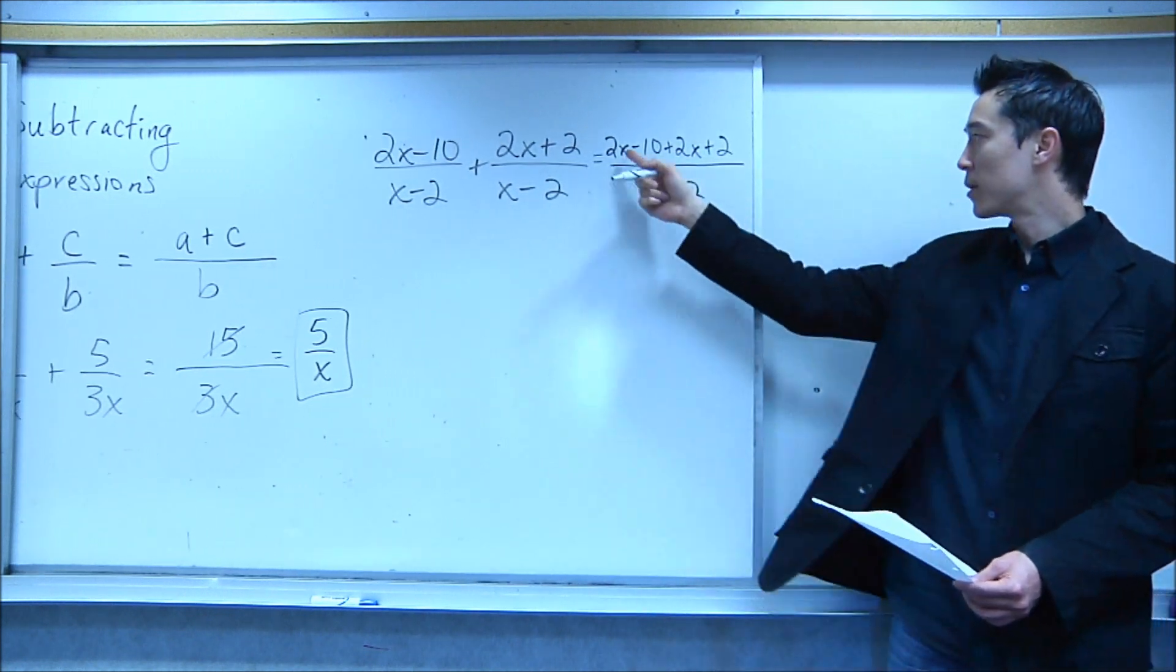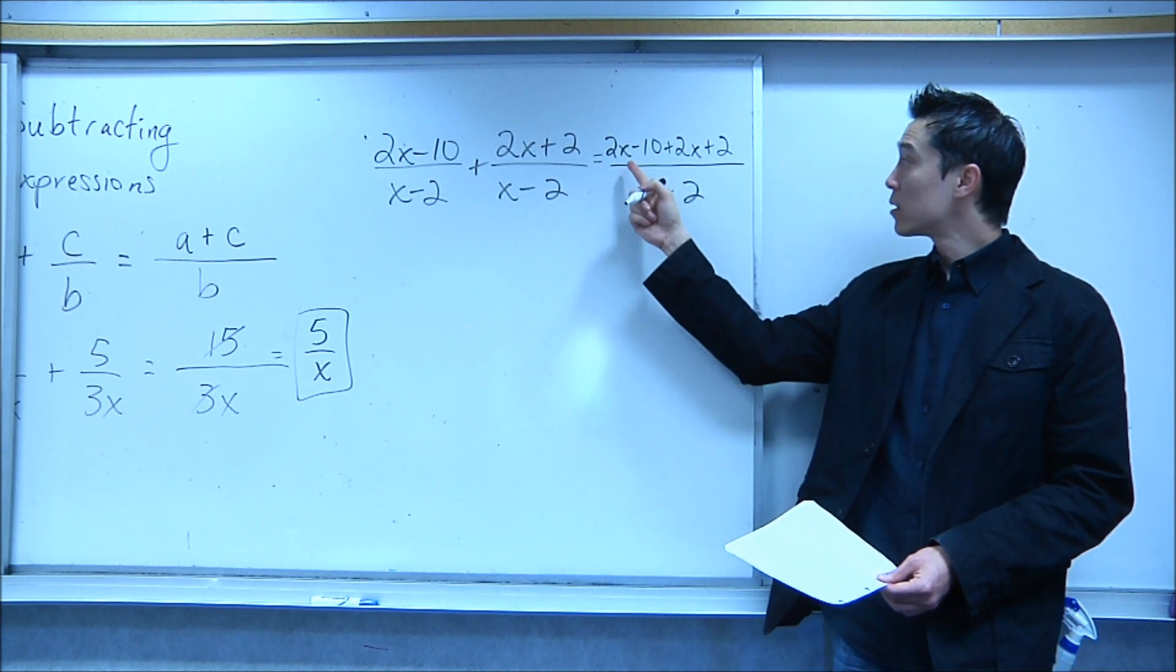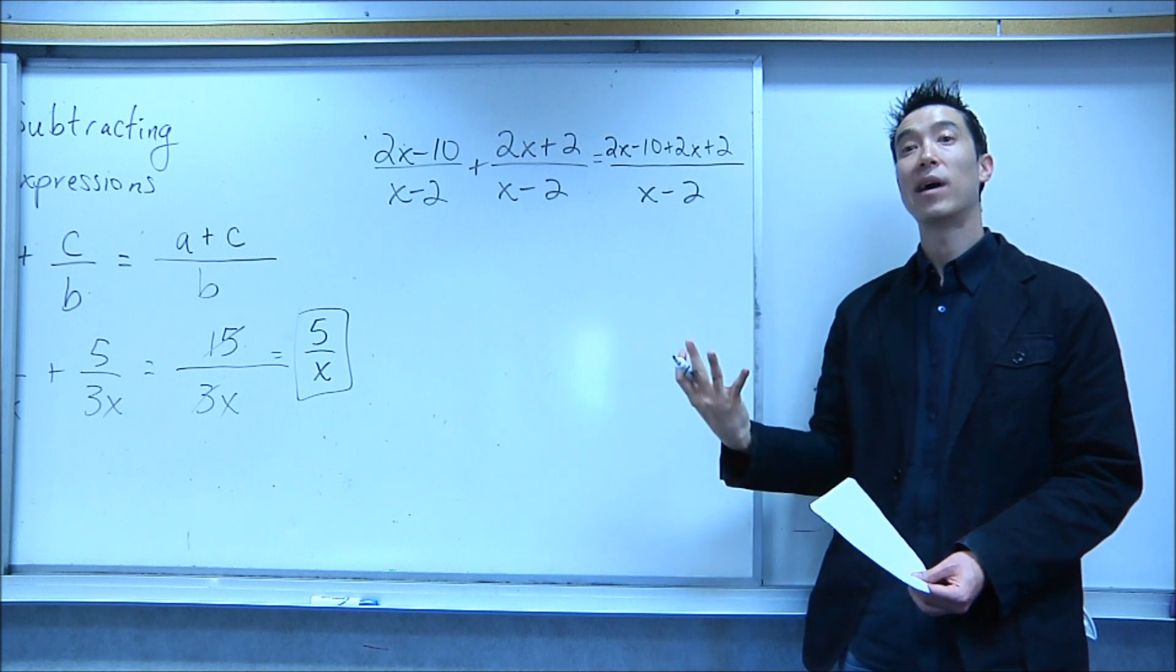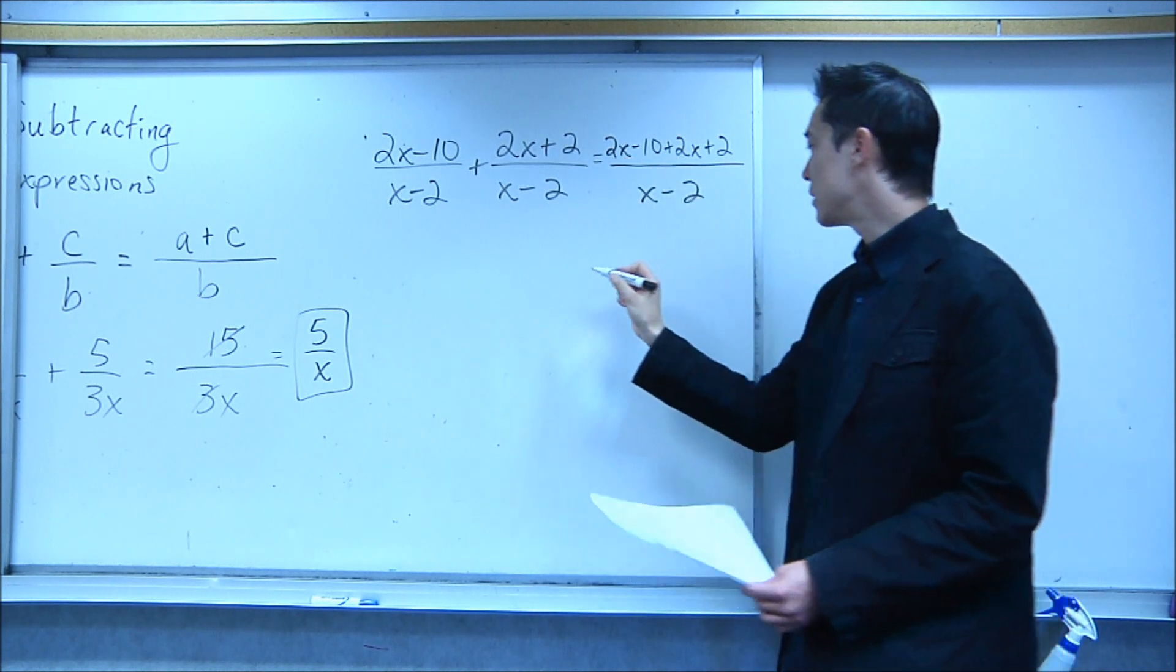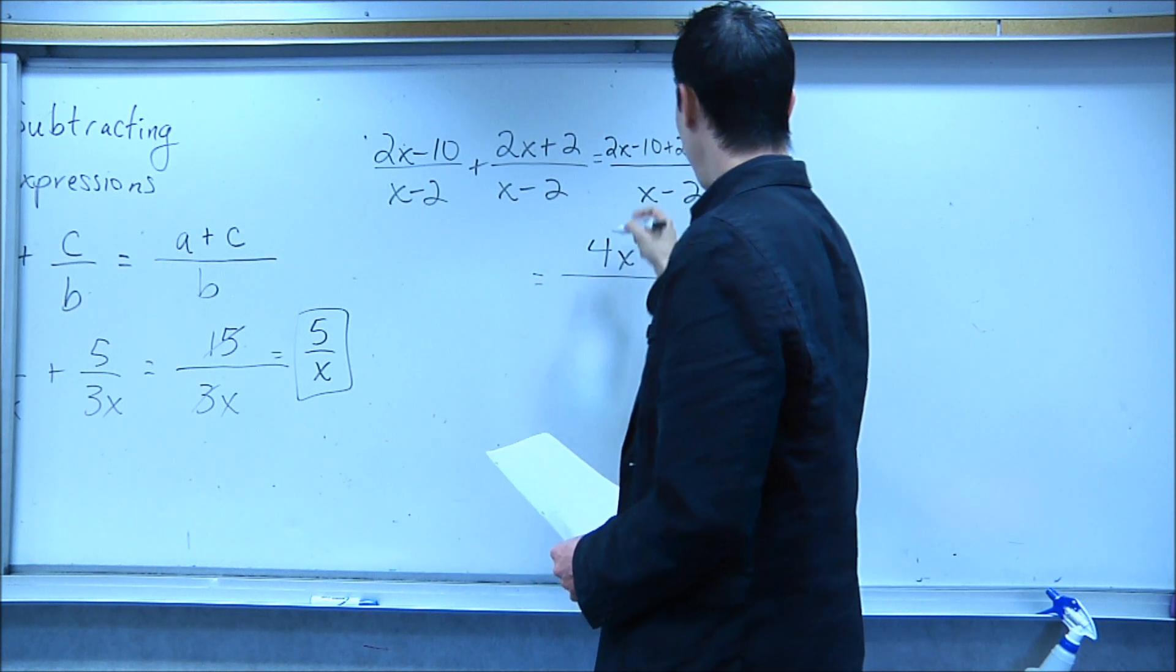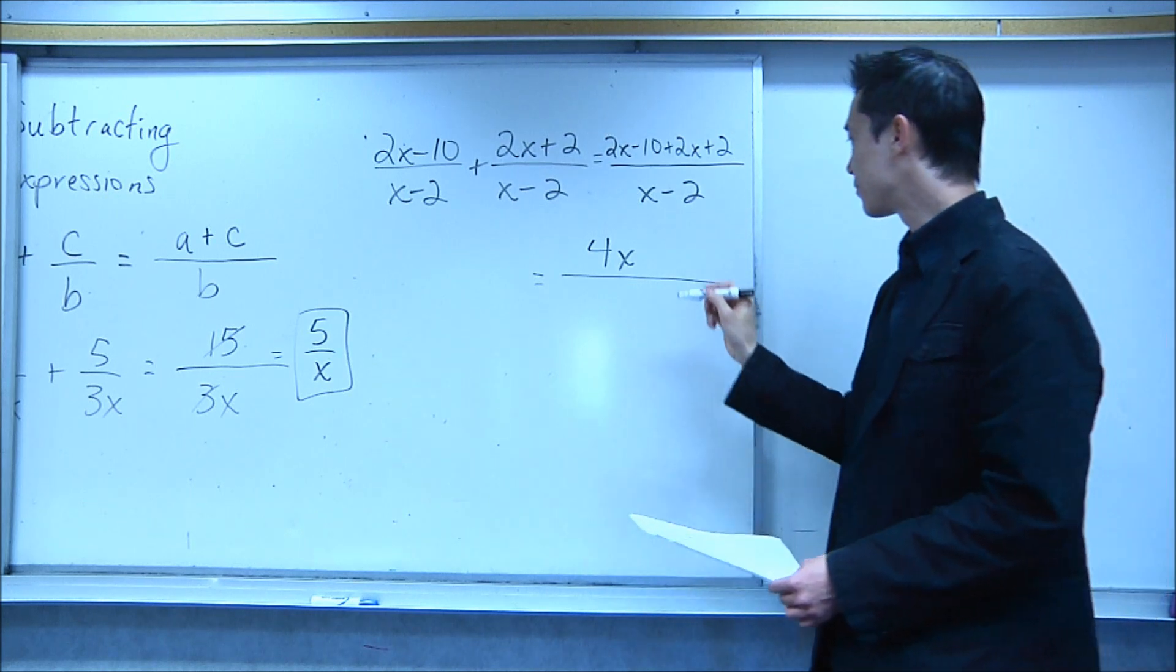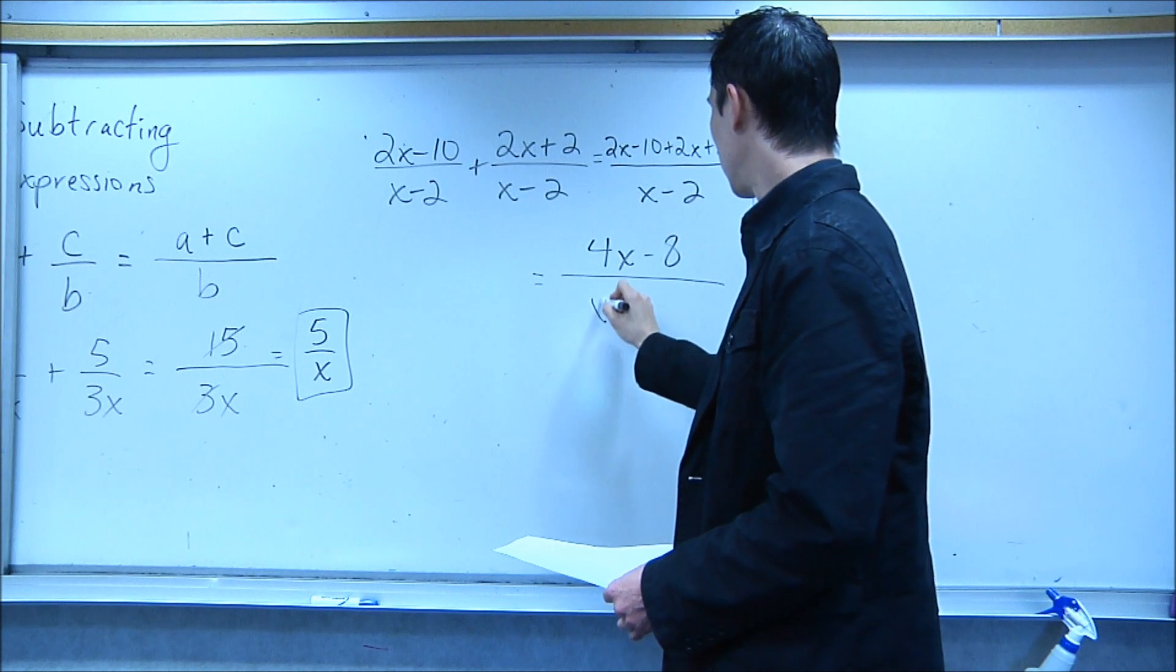So you combine it. You have four terms up here now. Now, in these four terms, I have a 2x, a 2x, a negative 10, and a 2. So you combine your like terms. So 2x plus 2x is 4x. And a negative 10 plus 2. What is negative 10 plus 2? Negative 8.